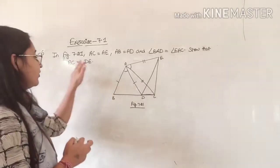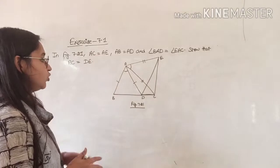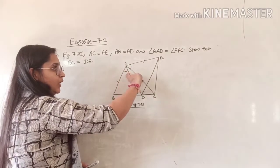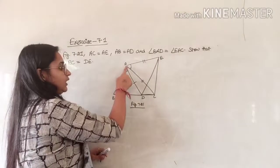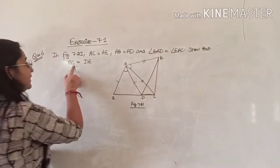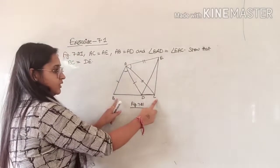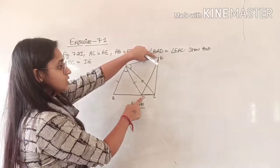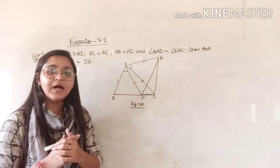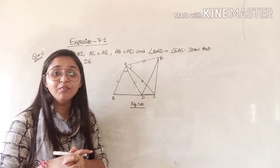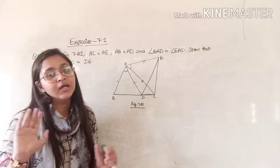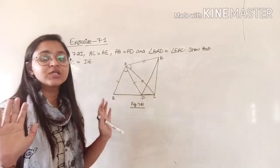Question number 6 is in figure 7.21. AC is equal to AE, AB is equal to AD, and angle BAD is equal to angle EAC. So we have to prove that BC is equal to DE. First of all, you have to analyze the figure — which triangles you can take. This is the most important point. If you know how to analyze the figure and which triangles to take, then the question becomes very easy.